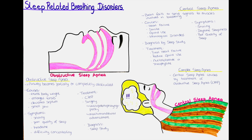Treatment options for obstructive sleep apnea depend on the severity of the condition and the underlying cause. Mild cases may be treated with lifestyle changes such as weight loss, avoiding alcohol, and sleeping on the side rather than on the back. In moderate to severe cases, continuous positive airway pressure, or CPAP, therapy may be recommended, which involves wearing a mask that delivers air pressure to keep the airway open during sleep.